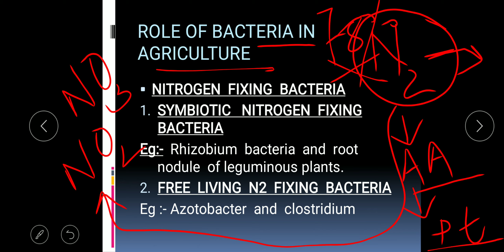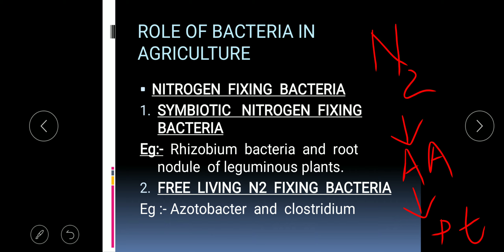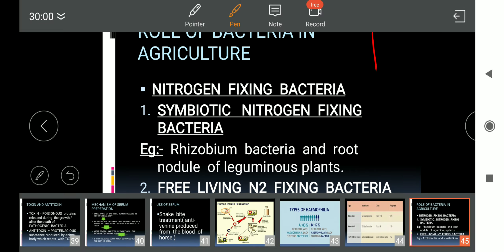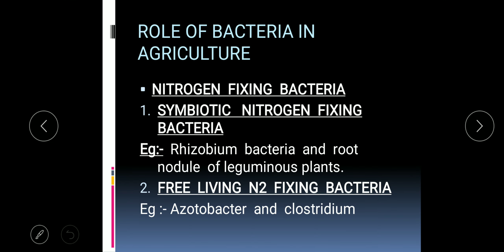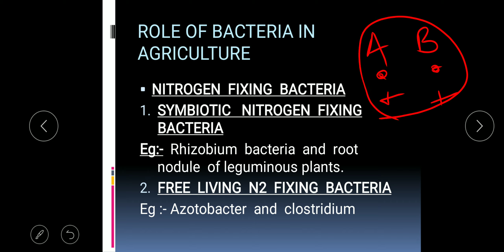That is why bacteria plays a very important role in the field of agriculture. There are two types of bacteria which help in agriculture by fixing nitrogen: first is the symbiotic nitrogen-fixing bacteria, and the second is the free-living nitrogen-fixing bacteria. Symbiotic association is a type of relationship between individuals of two different species in which both individuals get mutual benefit from each other.